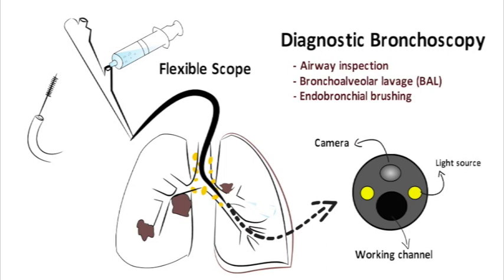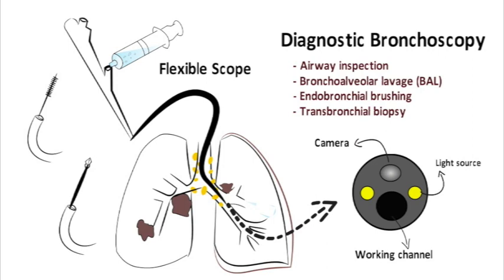One of the most common and useful tissue sampling techniques is transbronchial biopsy. In this technique, small forceps are passed through the scope and out to the distal part of the lung. The forceps are then used to take small, breadcrumb-sized pieces of the lung parenchyma. These biopsies are used in the diagnosis of a variety of pulmonary disorders, including infection, malignancy, inflammatory disorders, and lung transplant rejection.